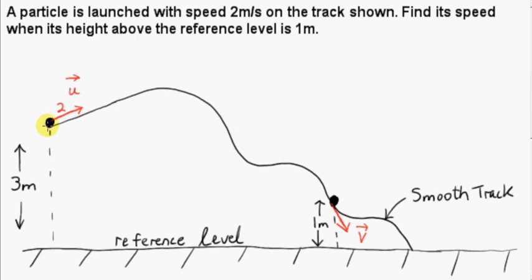In this example, a particle is launched with speed 2 meters per second on a smooth track. Its initial height is 3 meters. We want to find its speed when its height above the reference level is 1 meter. The reference level could be sea level, but whatever is suitable for the problem. In this problem, there are two forces acting on the particle: gravity, which has magnitude mg and is constant, and a contact force on the particle from the track.